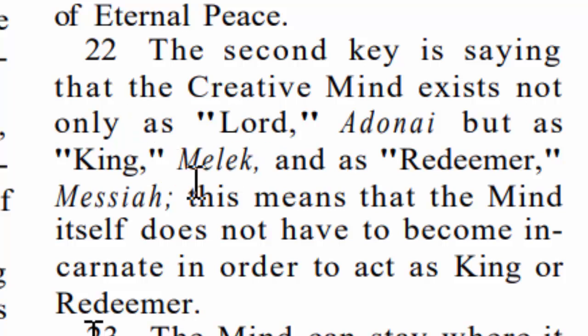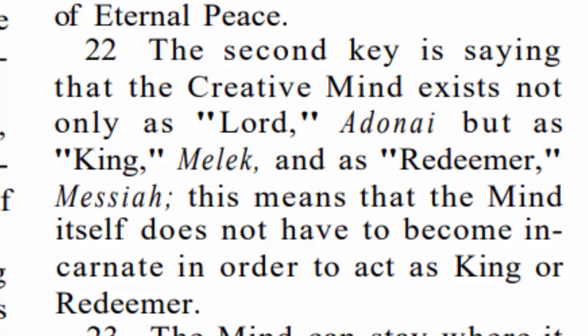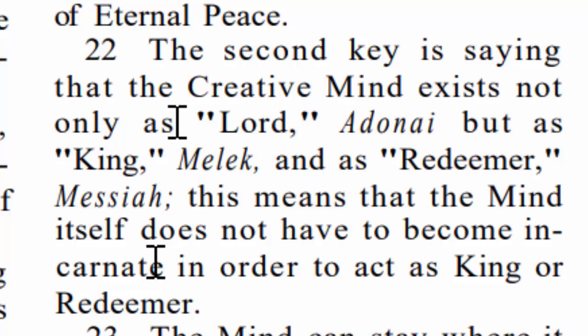This is a really important concept as we read along in this book. The mind itself does not have to become incarnate in order to act as King or Redeemer — this is talking about our Father who is at the center of the universe. He does not have to put on a physical body himself in order to come down here. There are arguments: those in the know will say the Messiah and the Father are one, while others point out who was he praying to on the cross saying 'why have you forsaken me?' When you understand this verse, it makes sense — even though the Father and the Messiah were one, the mind at the center of the universe never had to leave.